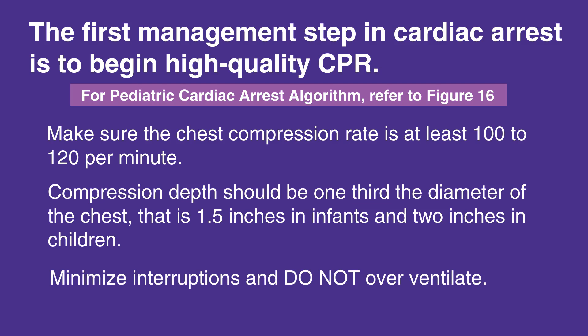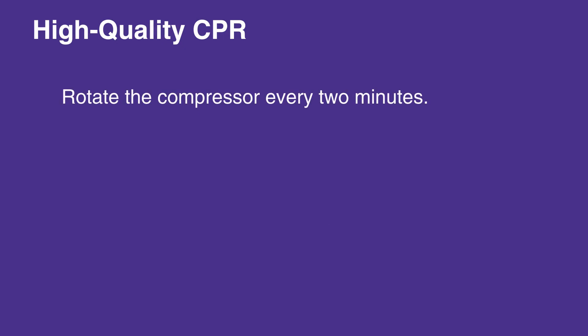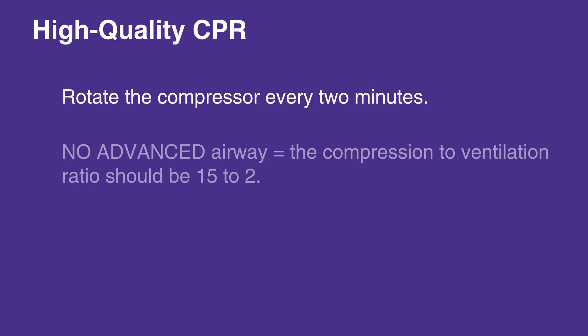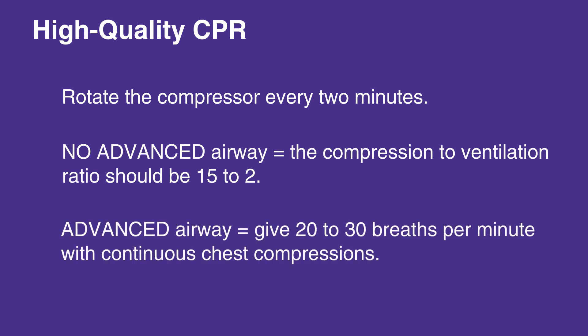Minimize interruptions and do not over-ventilate. Additionally, rotate the compressor every two minutes. If no advanced airway is available, the compression-to-ventilation ratio should be 15 to 2. If an advanced airway is available, then give 20 to 30 breaths per minute with continuous chest compressions.